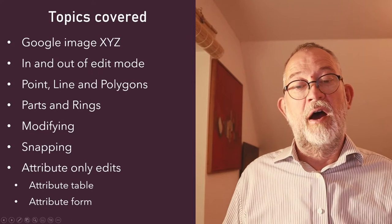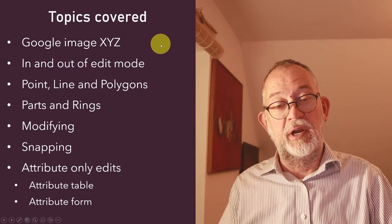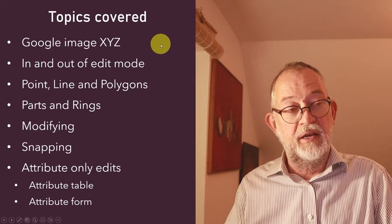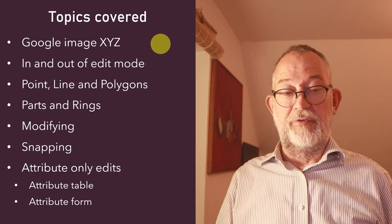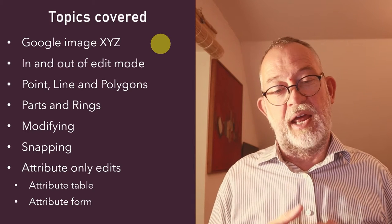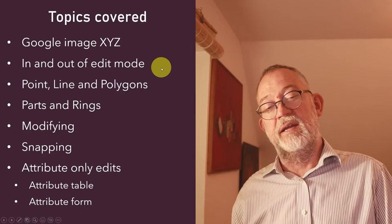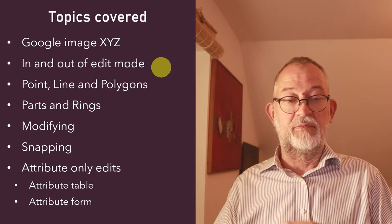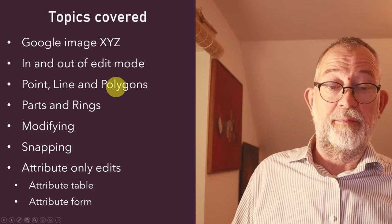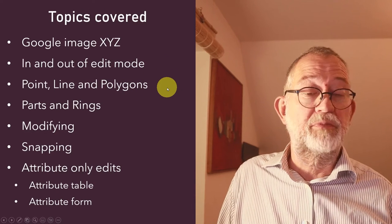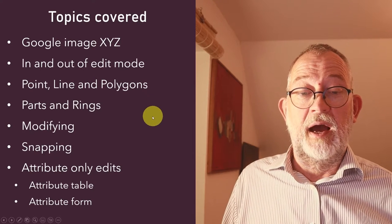First, an overview of what I'll be covering: loading in a Google image as an XYZ file — a Google satellite photograph backdrop image that I can draw on top of. Then I'll talk about in and out of edit mode, saving data and project data, and then points, lines, and polygons — the types and how they differ in the interface.